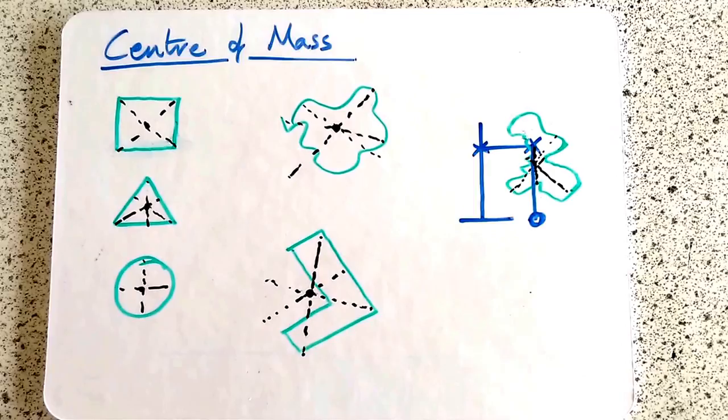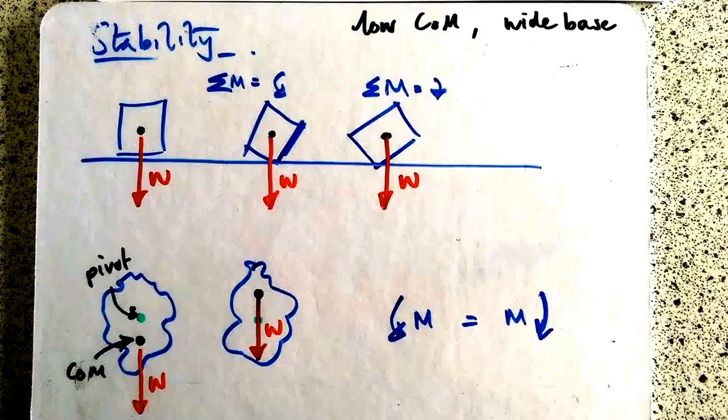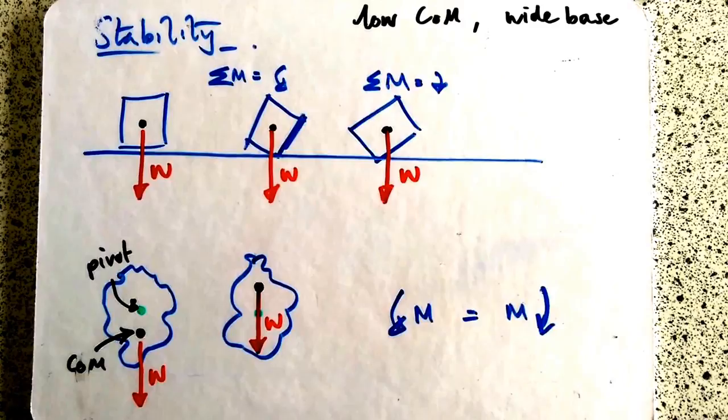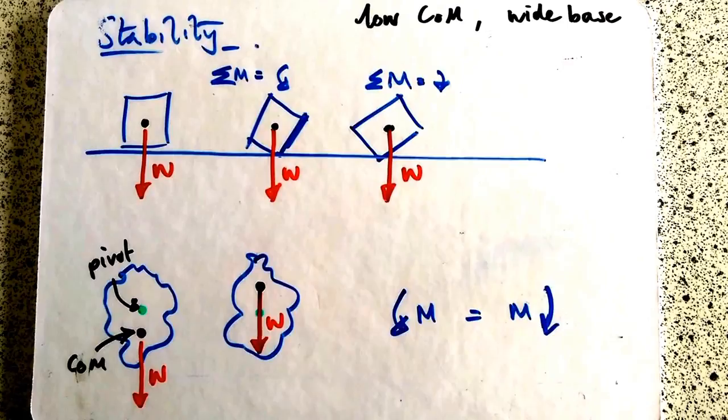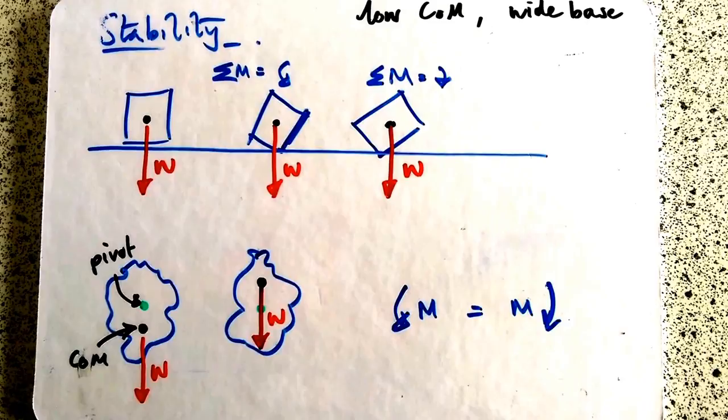So just to briefly talk about stability, if you want a stable object, you need to have a low centre of mass and a wide base. You can see the object here is not going to topple on the left. It's going to fall back to its original position in the middle diagram there because the weight is within the base. And on the right, the sum of all the forces is in the clockwise direction because the weight is outside the base. So it's going to fall into a new position.